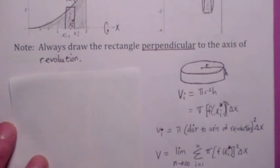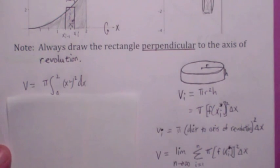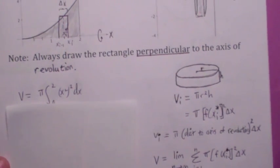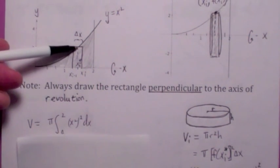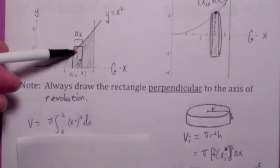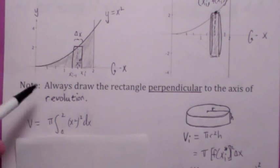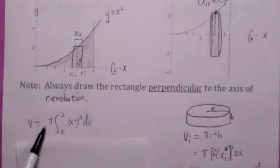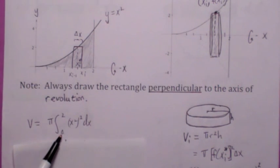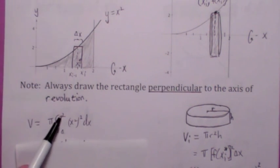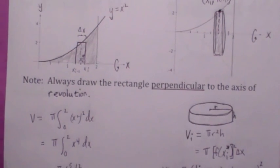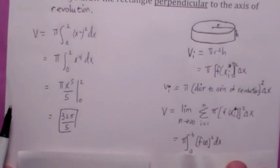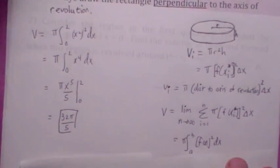So what is the answer to this problem? Well, f of x is x squared, so the radius is x squared — the distance from the outer edge of the cylinder to the axis of revolution is just f of x. Adding these up from 0 to 2, it's pi times the definite integral from 0 to 2 of x to the 4th dx, and you end up with 32 pi over 5.